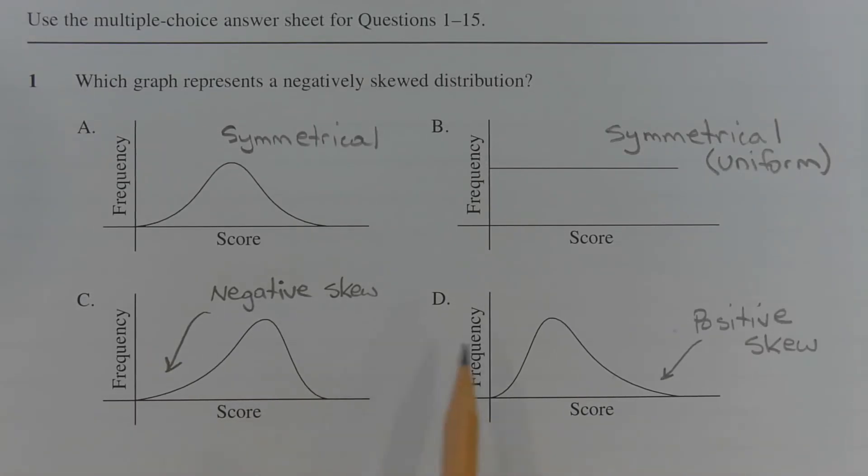And option D describes a positively skewed distribution because the right hand tail is longer than the left hand tail. Therefore the answer is option C.